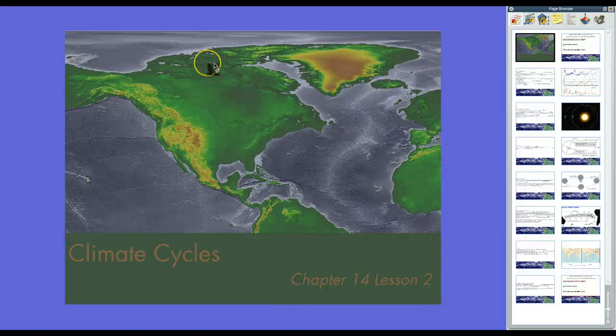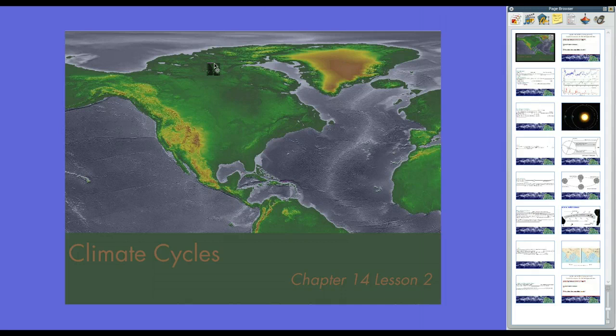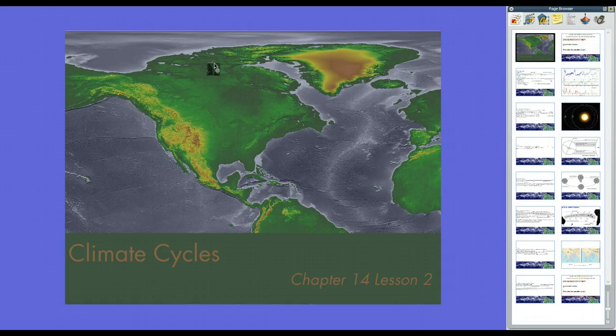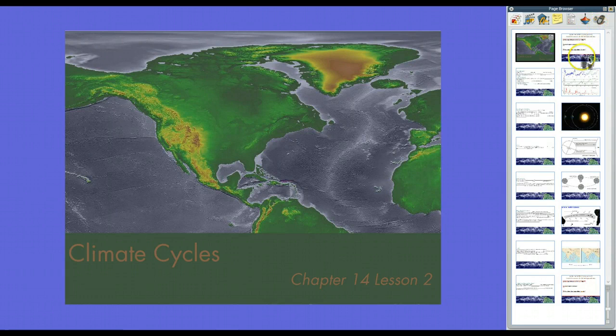Hey guys, Mr. Klein here. We are talking about Chapter 14, Lesson 2 in your textbook, Climate Cycles. We're going to talk about how climate changes over time. For example, the picture right here that you're seeing is a digital relief of what the planet must have looked like during the last ice age, about 30,000, 40,000 years ago. So let's go ahead and let's get started.